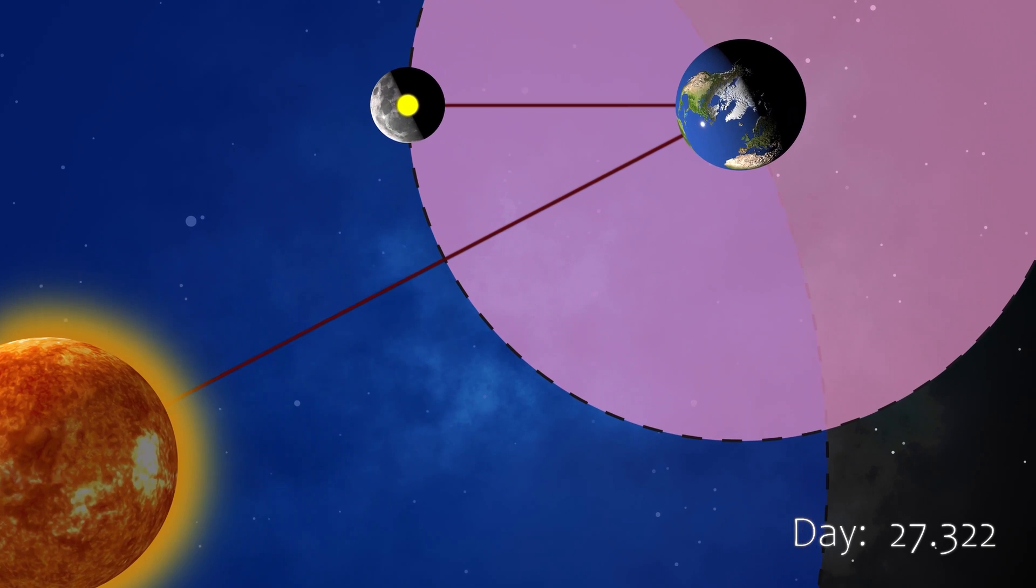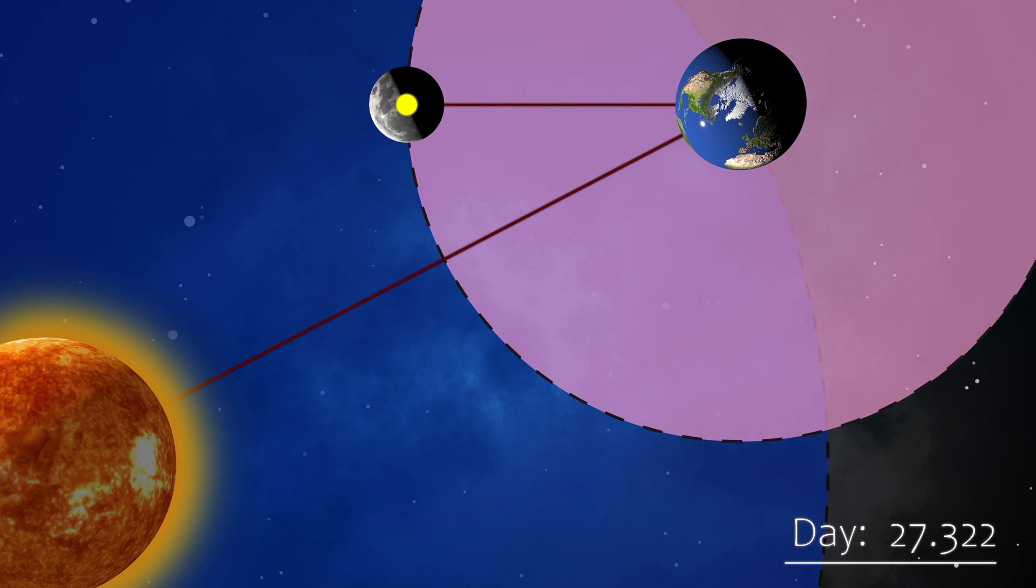Now like before, we see that moon has taken 27.32 days to go one complete revolution around the earth and return to the dot. But we can see that because the earth was also moving in its orbit, the moon is no longer aligned with the earth and the sun.